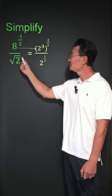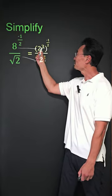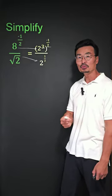And we also want to change that square root of 2 as 2 to the half power as well. And when we have exponent to an exponent, we multiply them.